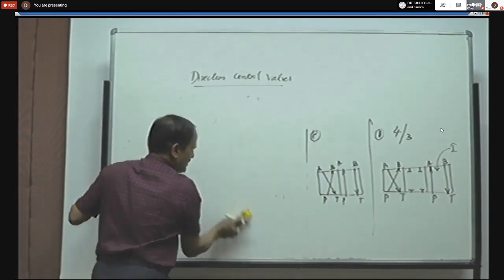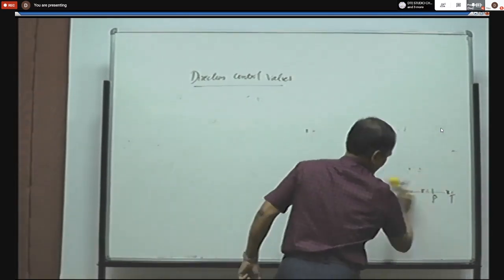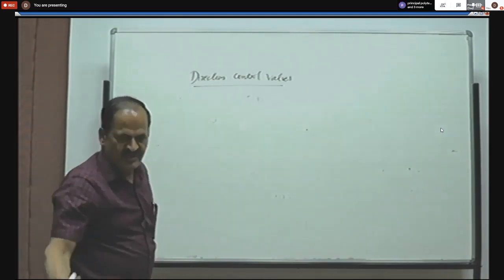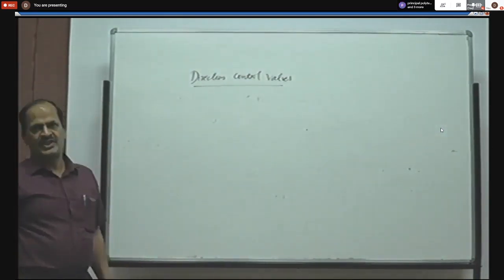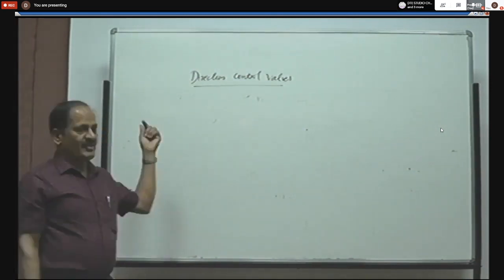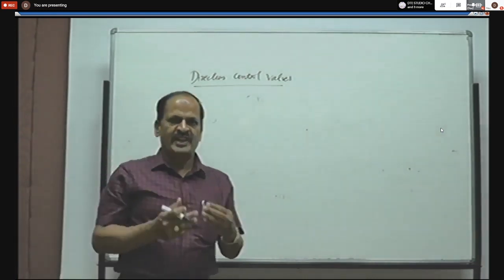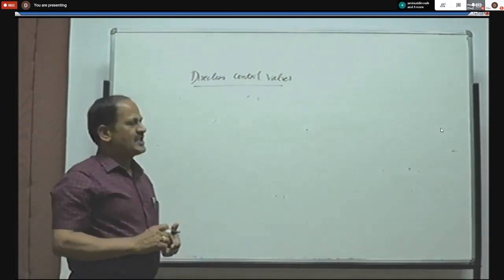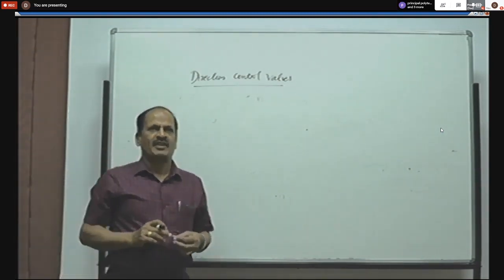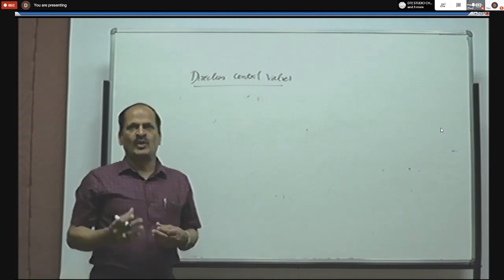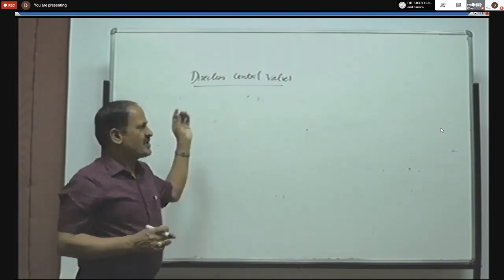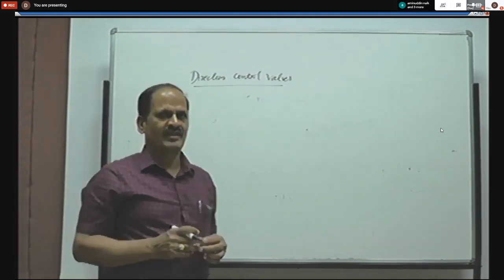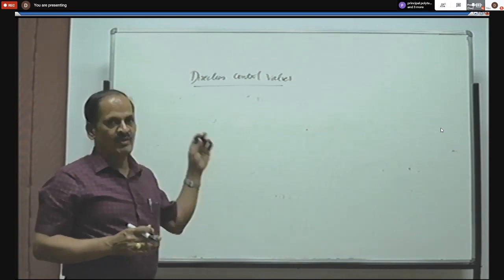There are three types of control valves used in hydraulic systems: pressure control valves, direction control valves, and flow control valves. In the case of pressure control valves, the pressure of fluid entering the actuator can be regulated and controlled — this is needed whenever the load is varying and pressure must be varied accordingly. In the case of direction control valves, the direction of flow of fluid entering the actuator can be changed or reversed by using direction control valves.